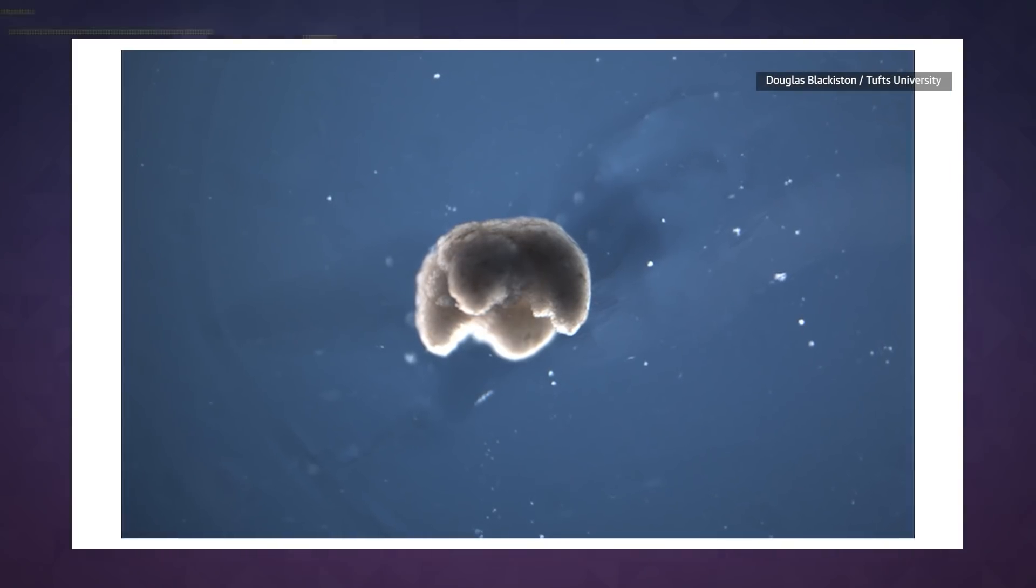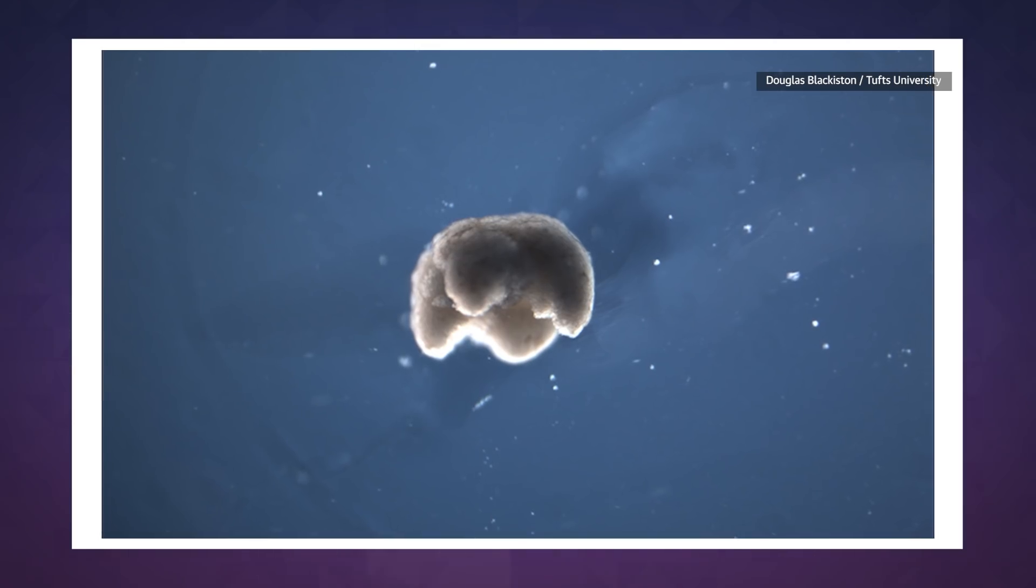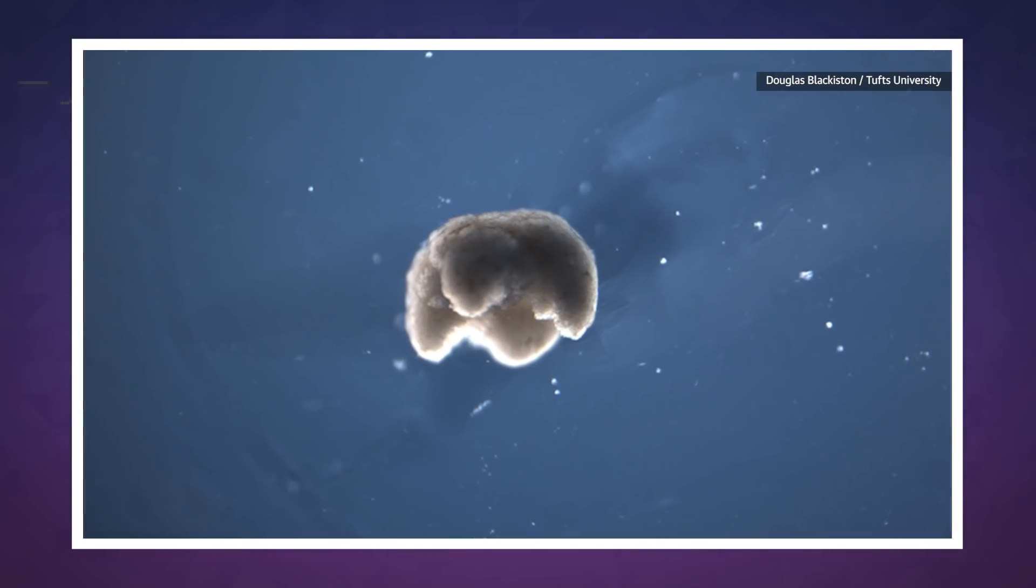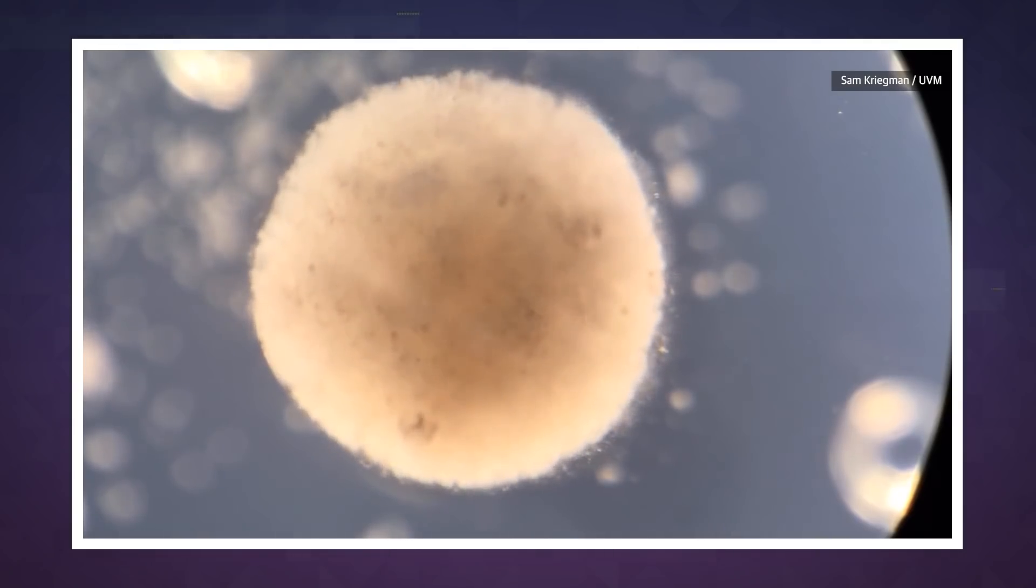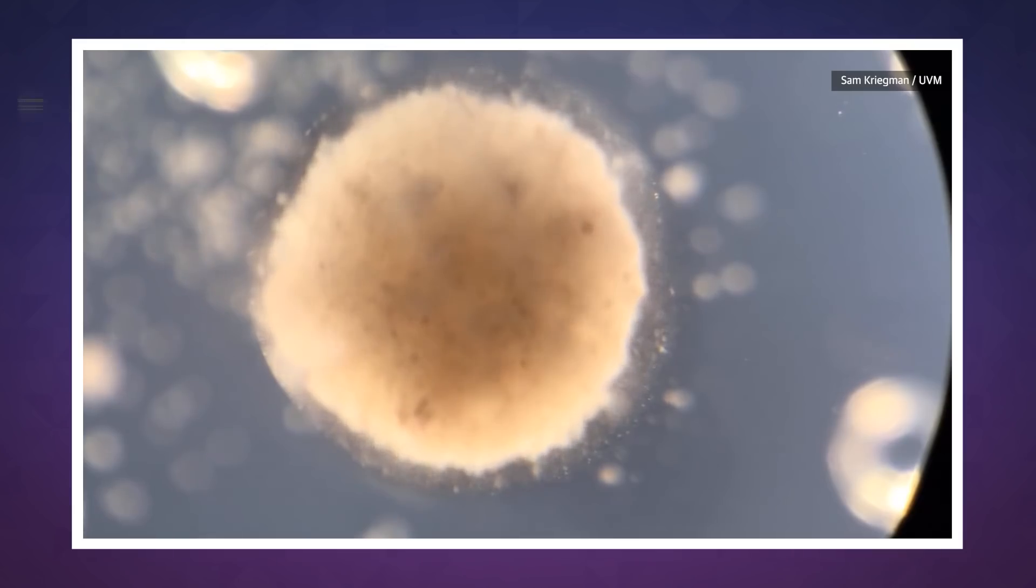The team calls these millimeter-wide blobs xenobots, which they made using the stem cells of the African clawed frog. Once those stem cells have been left to incubate for a while, they were woven together into specific shapes defined by an evolutionary algorithm running on the University of Vermont's Deep Green supercomputer cluster.